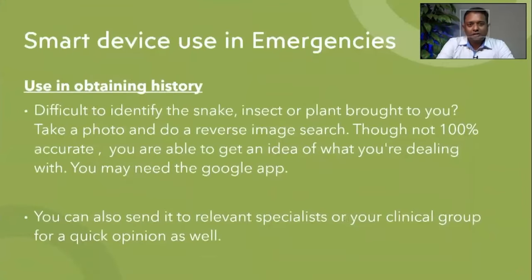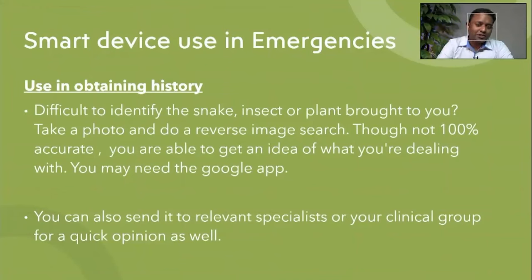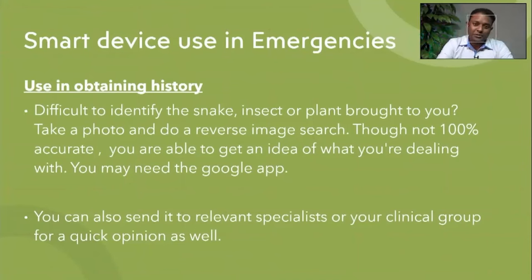When you get poisonings or toxic bites from snakes, plants, or leaves, you can take a photo and do a Google reverse image search. You take a photo of the plant or snake, do a reverse image search, and it gives a reasonably good result. You should be able to identify the plant reasonably well, and you can also send the photo to your specialist or the toxicologist on call for an opinion.